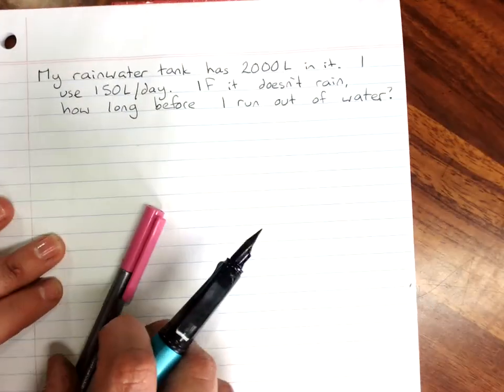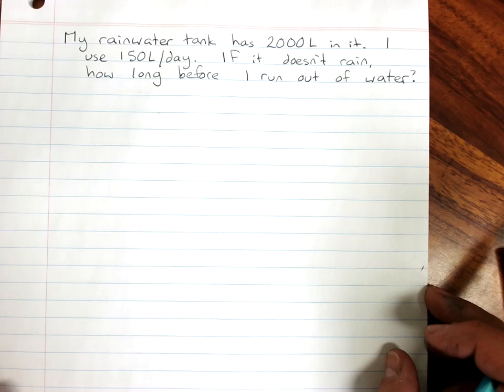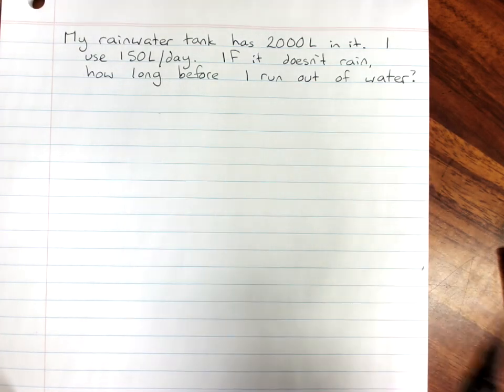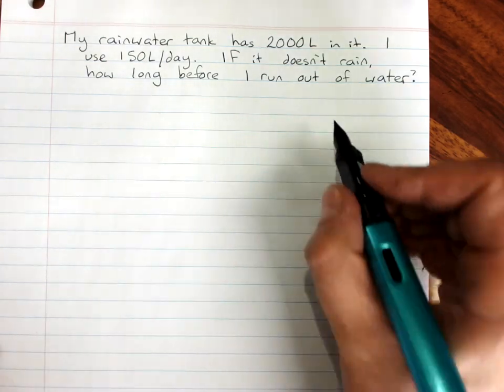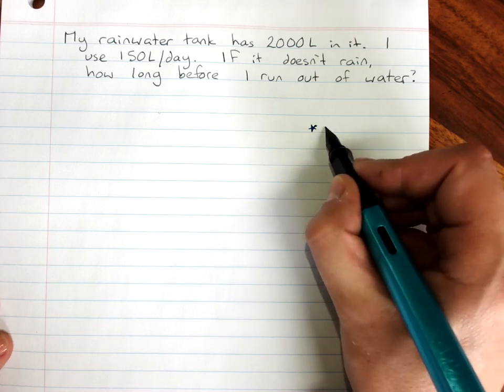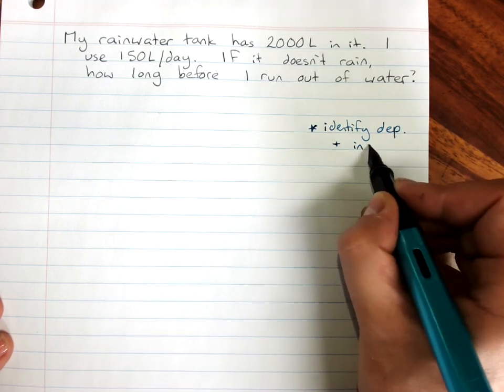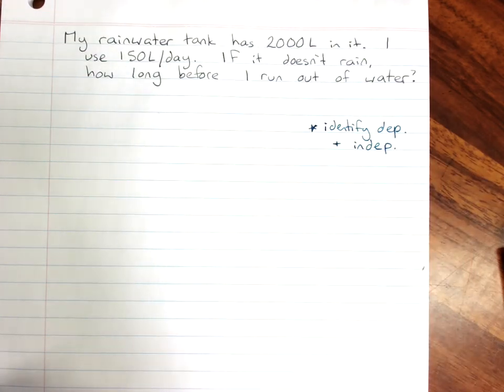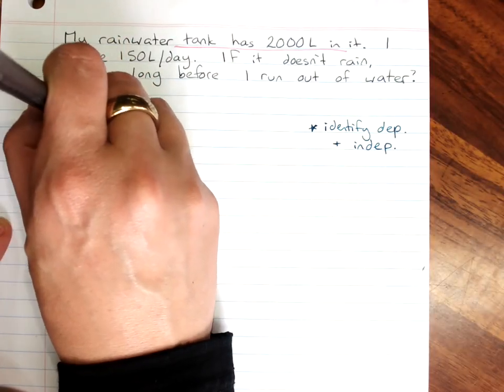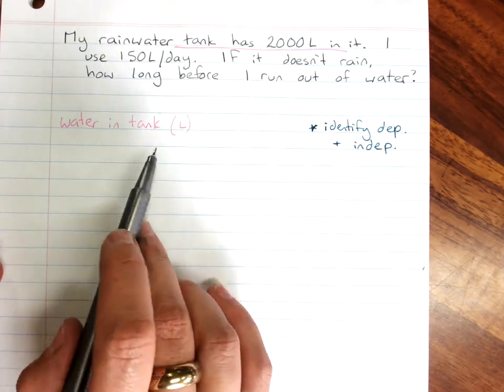The next problem I've given us is this one. My rainwater tank has 2,000 liters in it. I use 150 liters a day. If it doesn't rain, how long before I run out of water? So, we start by asking which one is dependent and which one is independent.